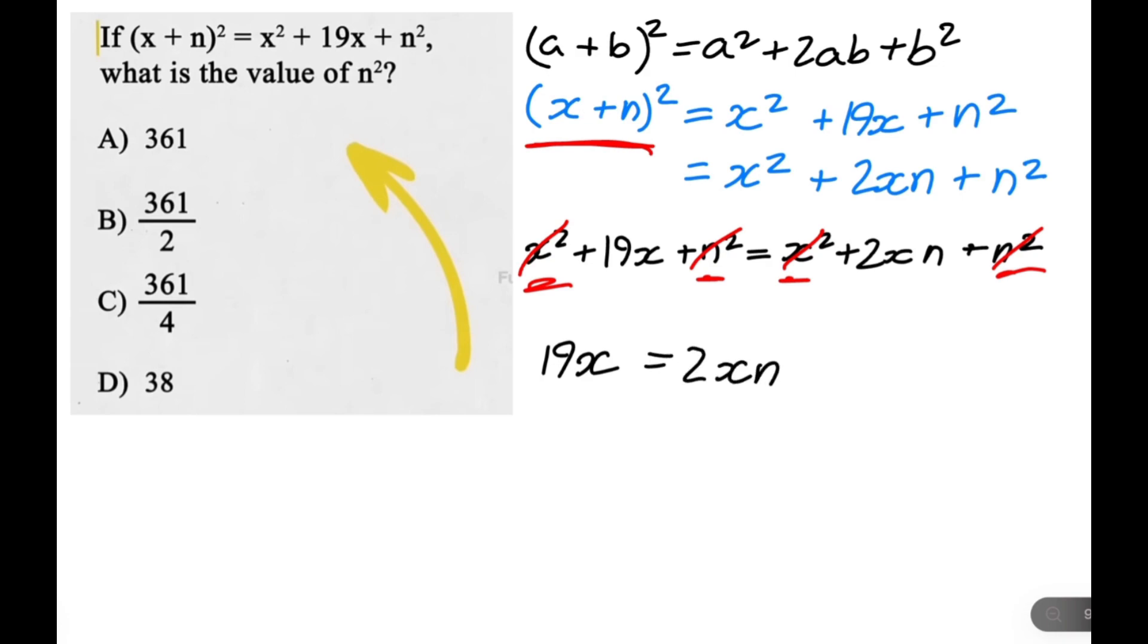Now let's divide both sides by x. That'll just get rid of the x on both sides. So we have 19 is equal to 2n. And if we divide both sides by 2, we get n is equal to 19 over 2.